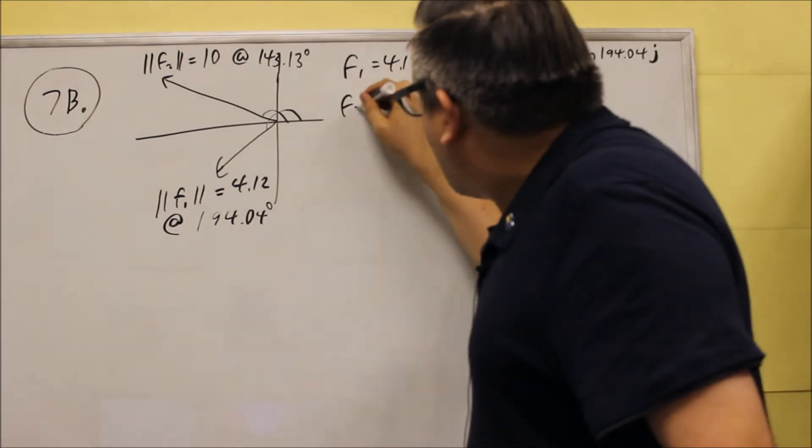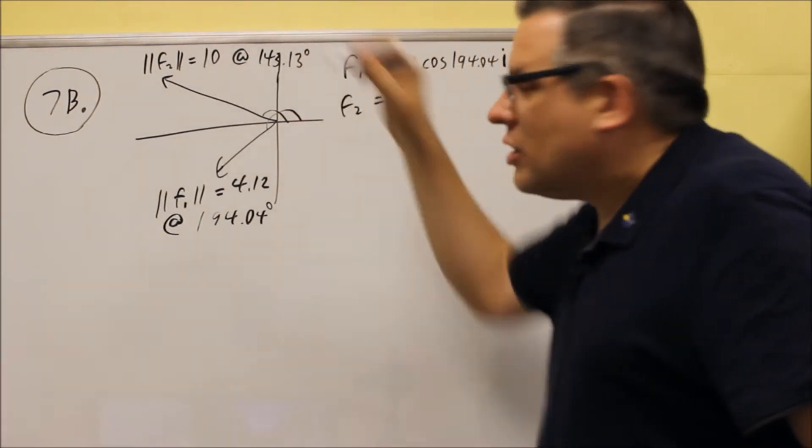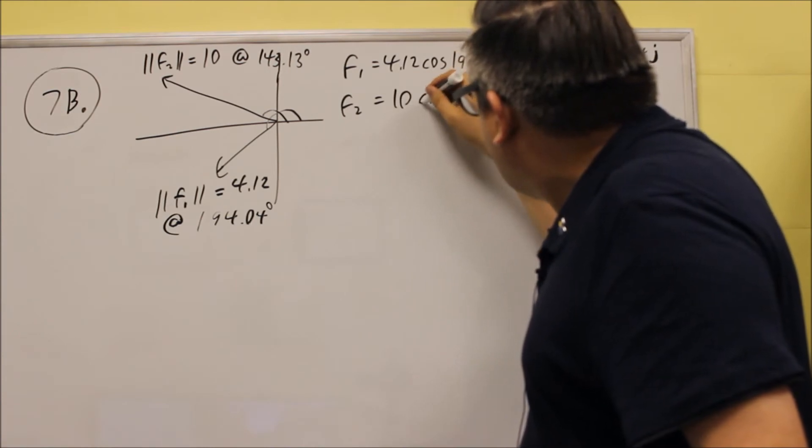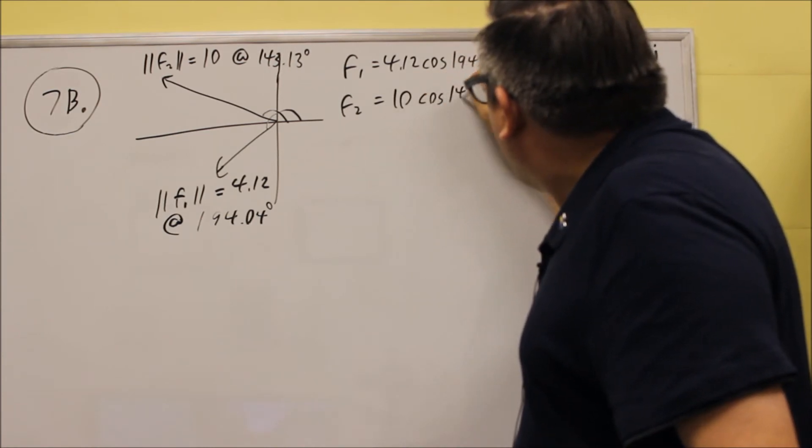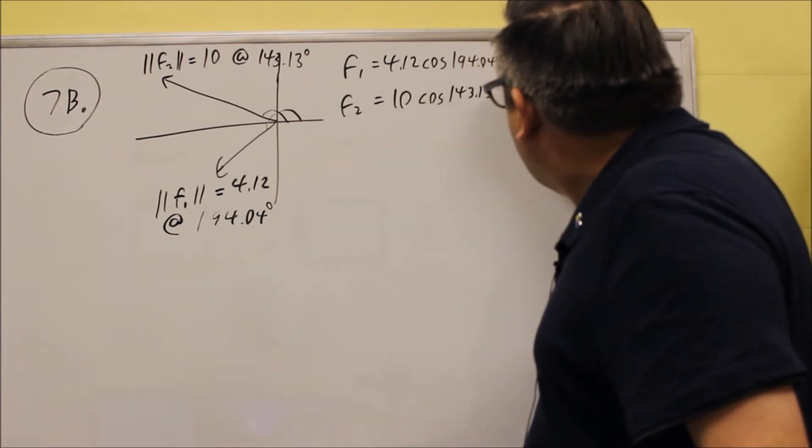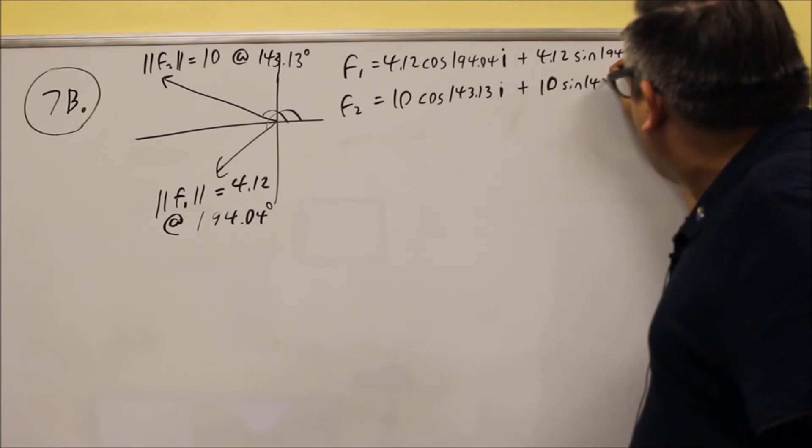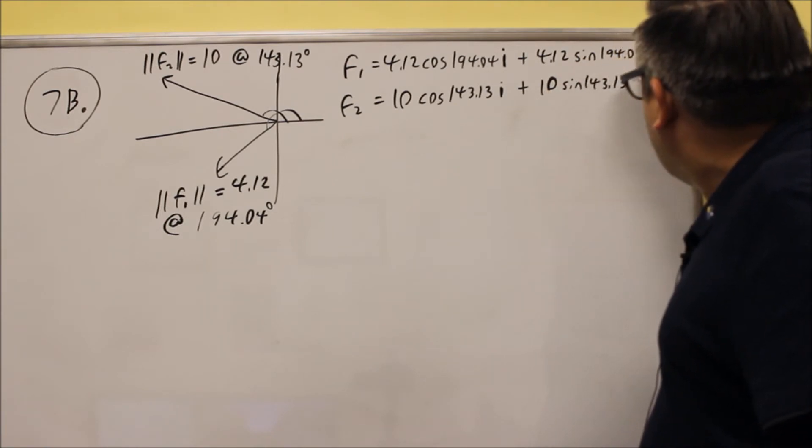Let's write out the second force. The second one has a magnitude of 10. So we're going to do 10 cosine of 143.13, and that's i. And then 10, we'll do sine 143.13 j.